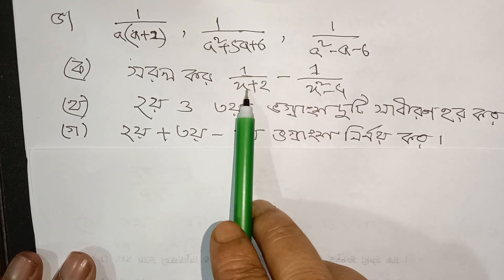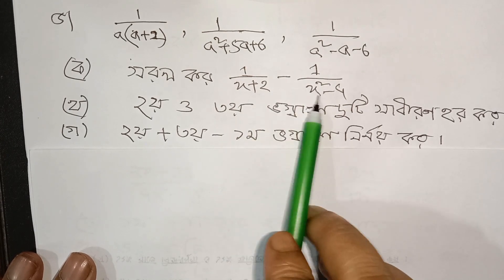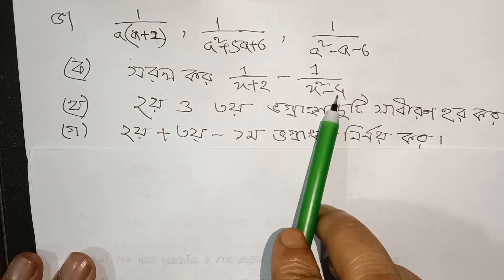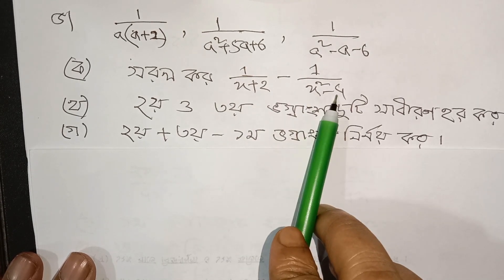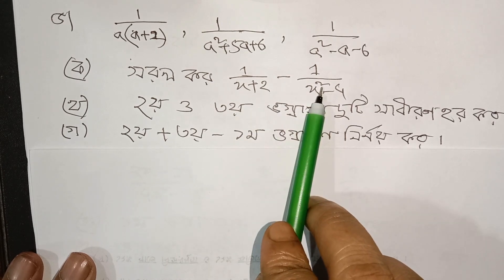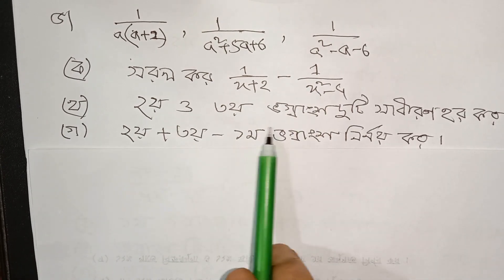1 by x squared minus 4, partially equal — the first thing we can do is to factor the expression, which is the oldest approach.